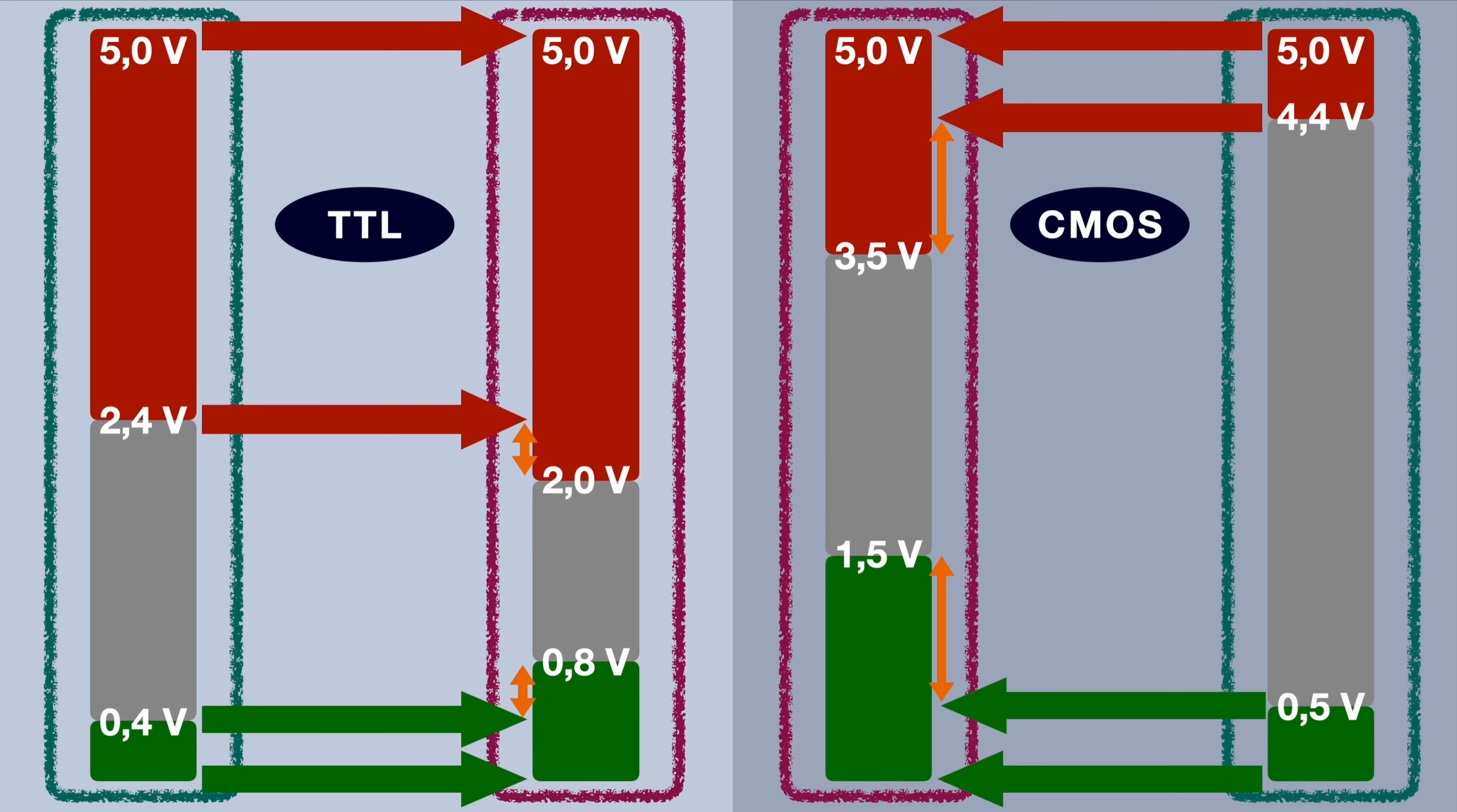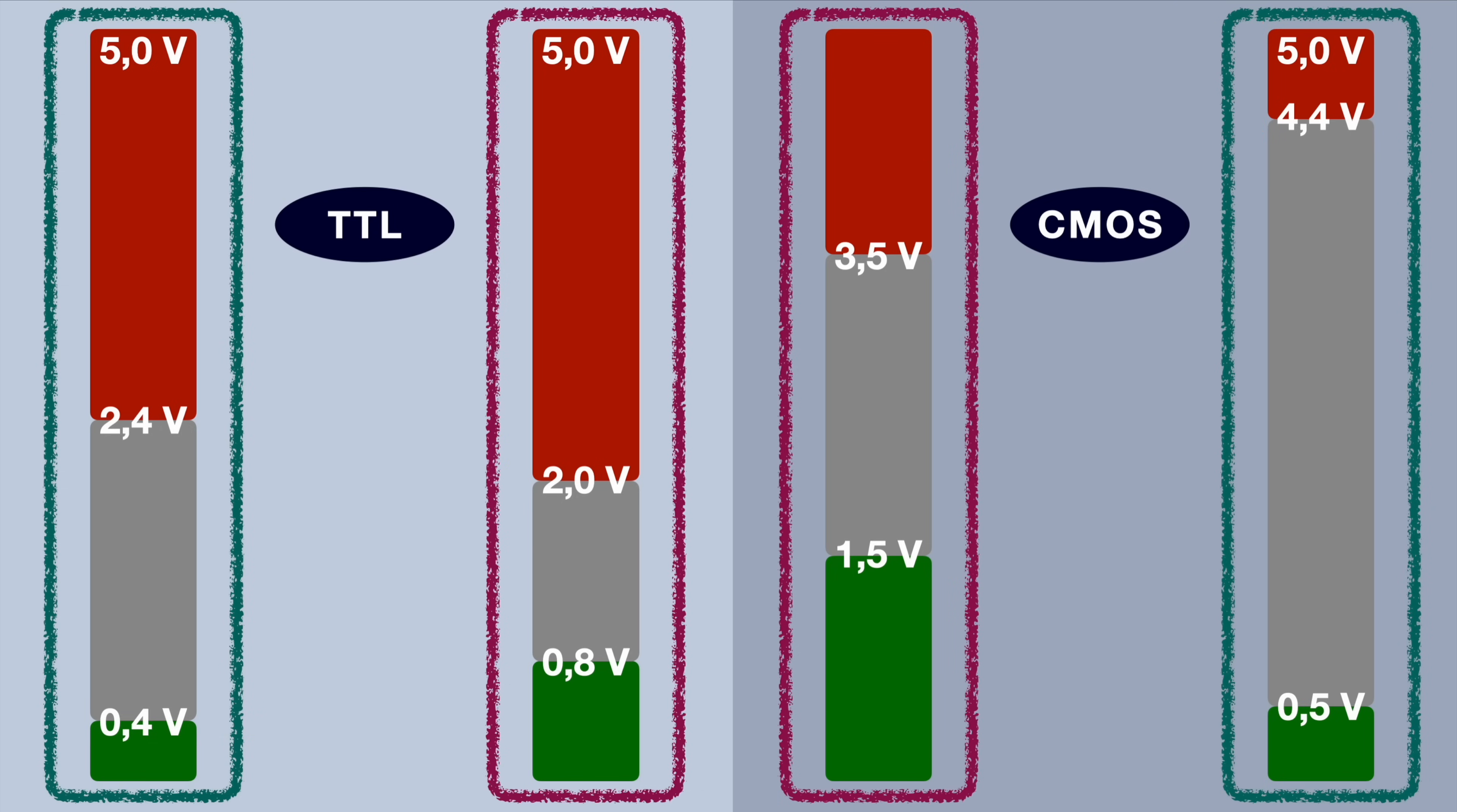While those are interesting differences between TTL and CMOS in terms of the voltage bands, the interesting bit is what would happen if you would try to communicate from a TTL to a CMOS device or from a CMOS to a TTL device. Because a high is still a high and a low is a low, so from a digital communication point of view it's basically the same, but the voltage bands can cause trouble.